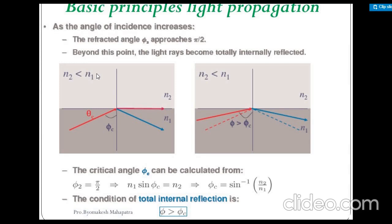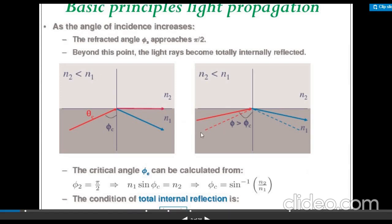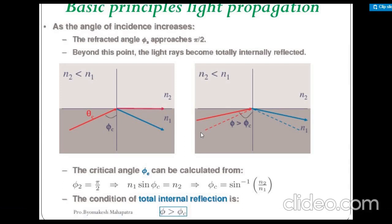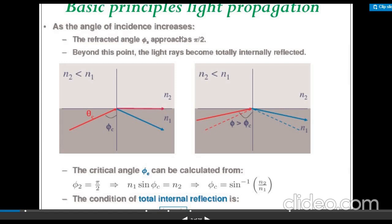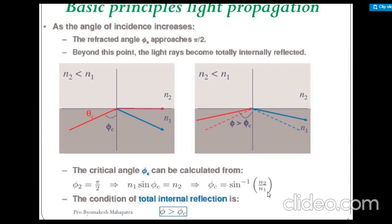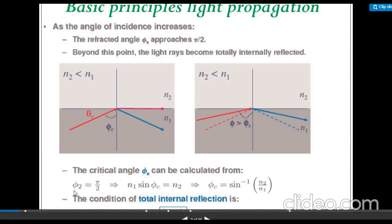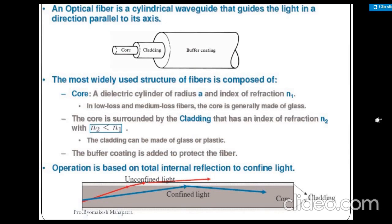Basically, how does light get propagated and what are the conditions for total internal reflection? As the angle of incidence increases, when the angle of refraction becomes 90 degrees, that is called the critical angle. The critical angle is given by φ_c = sin⁻¹(n2/n1), where n2 is the refractive index of the second medium and n1 is the refractive index of the first medium. To get total internal reflection, the condition is φ ≥ φ_c.